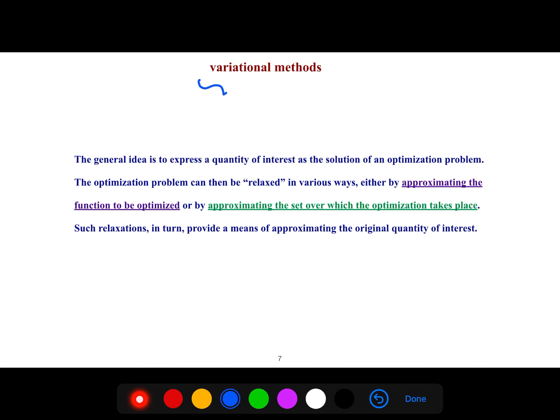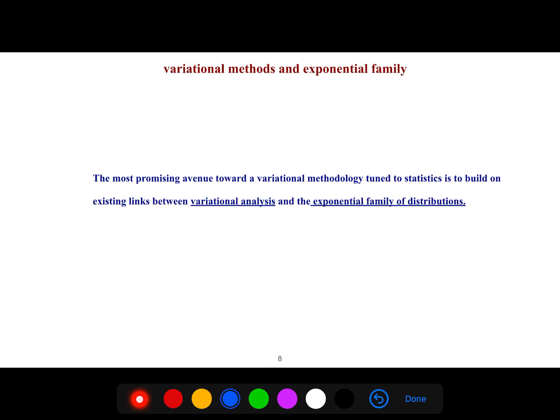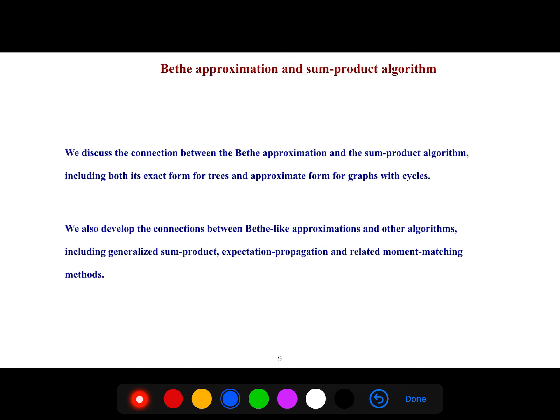And whenever you see variational methods it means we're trying to turn it into an optimization problem. And there is a good link with exponential family because the most promising avenue toward a variational methodology tuned to statistics is to build on existing links between variational analysis and the exponential family of distributions.